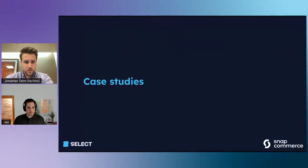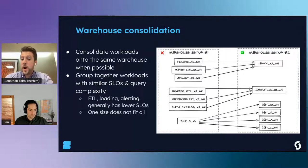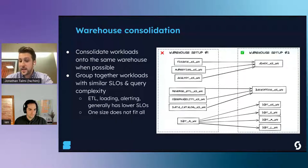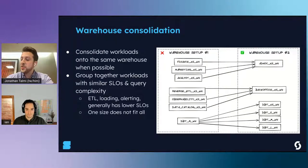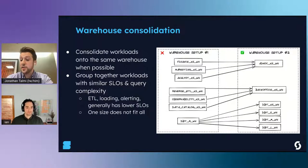Now that Ian shared the framework, let's explore some case studies from Snap Commerce where we applied it. We talked about why warehouse utilization matters due to minimum billing periods - you can end up paying a lot for idle time when a warehouse isn't well utilized. You want to avoid spinning up a warehouse just to run a single query and then having it sit idle, especially for larger warehouses. We recommend consolidating workloads onto the same warehouses when they have similar SLOs and query complexity. For example, rather than giving separate warehouses to marketing, finance, and analytics, you can probably consolidate these into a single warehouse, reducing the chance of it sitting idle.